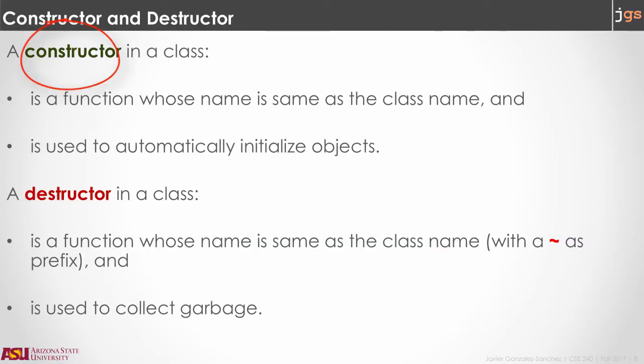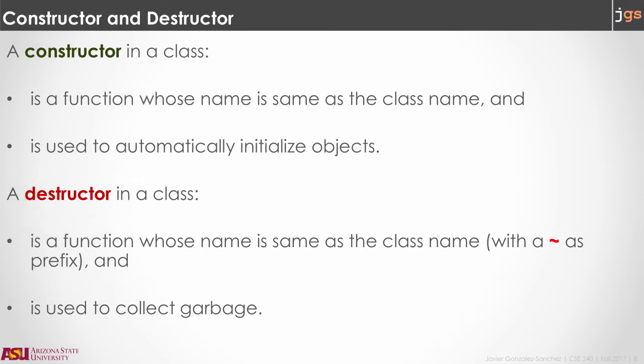You are familiar with constructors — methods that have the same name as the class and are called each time you create a new object. They exist in Java and they exist also in C++. A new concept is destructors. These are methods that also have the same name of the class but with a tilde at the beginning, and they are called automatically when the object is removed from memory. In Java you have garbage collection, so you don't worry about removing objects. However, in C++ we do not have a garbage collector, because we do not use an interpreter or a virtual machine. Therefore, you are responsible for removing your objects from memory when you no longer need them, and when that happens the destructor is called.